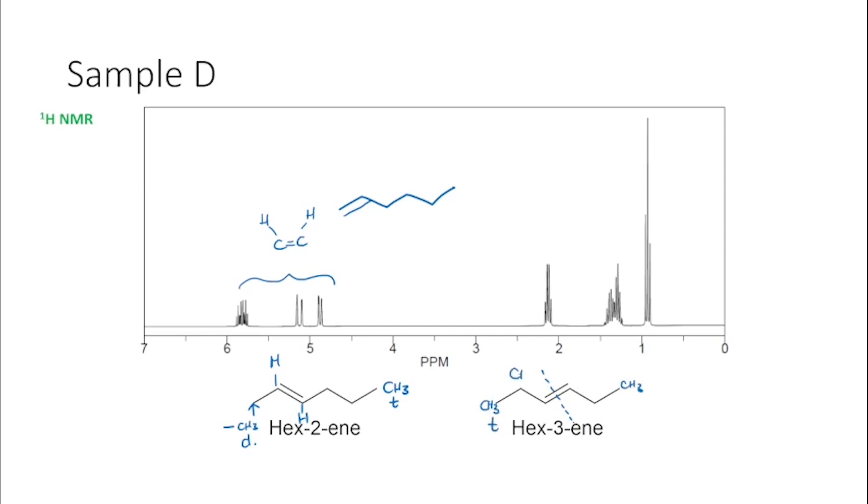We would expect to see a CH2, but it would be next to four protons. So we would expect to see some kind of quintet, probably. And then our alkene here, we would expect to see a triplet again, because it's next to the CH2 group.